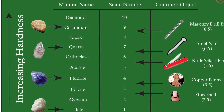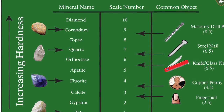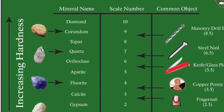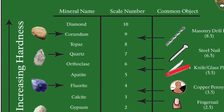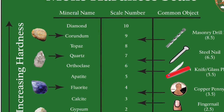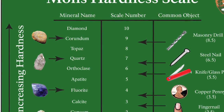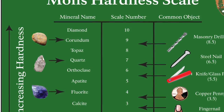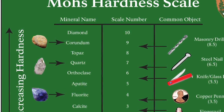The hardness of a mineral is its ability to resist scratching. Friedrich Mohs, a German mineralogist, developed a hardness scale over 100 years ago. The hardest mineral known, diamond, was assigned the number 10. The Mohs hardness scale ranks the order of hardness of minerals and some other common objects.